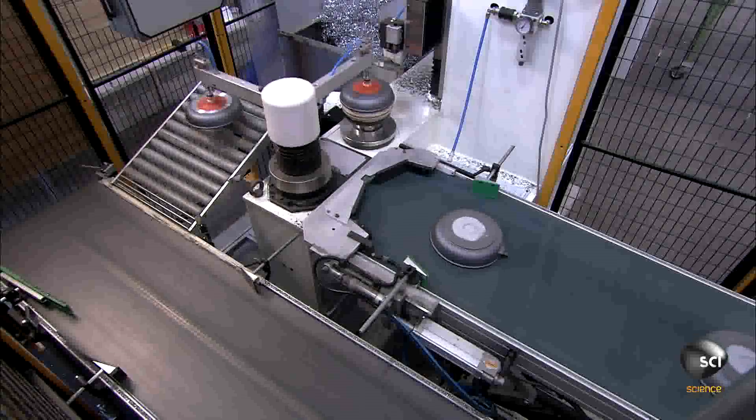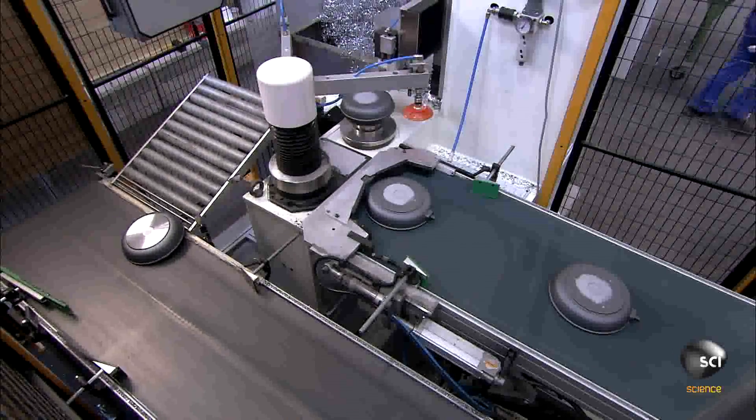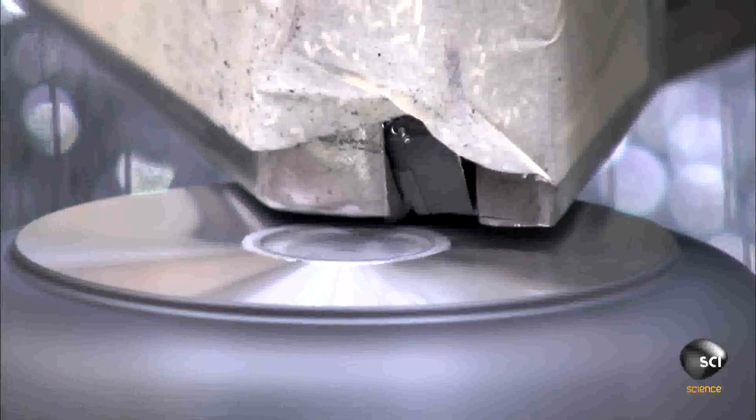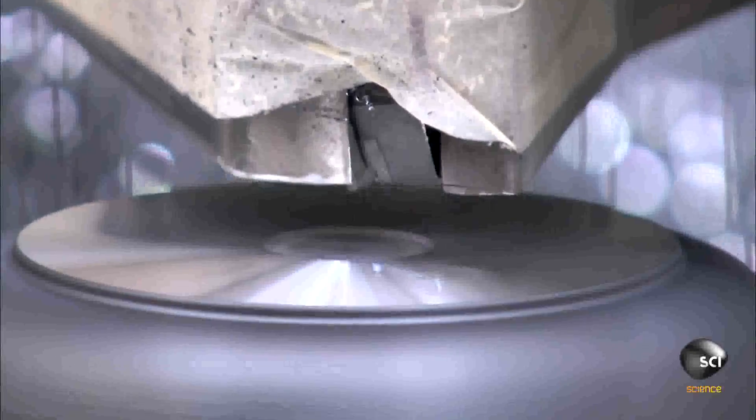Once the pans have cooled, a robot transfers them to a lathe. The lathe spins the pan as a tool shaves off a thin layer of aluminum. This leaves a clean level surface on the bottom of the pan.